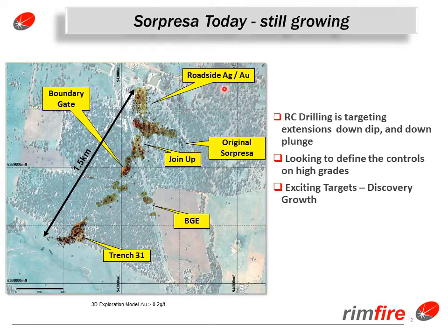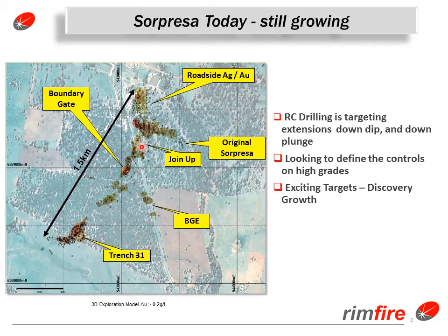We have a range of names along the strike length of the mineralization including the roadside area — roadside north and the plunging chute. This has a strong silver component with the gold system. Then we have the original Supraza area discovered in 2007, the join up area, boundary gate, boundary gate east, and trench 31. We're looking to define the high grade controls on the system, principally as we head out to the southeast and to the east. These are exciting discovery growth targets for drilling.